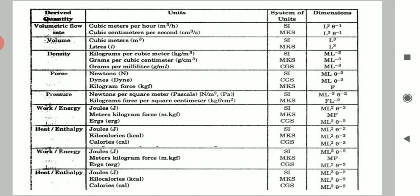The second derived quantity is volume. As discussed, volume is the multiplication of length, width, and height, so its unit will be meter cube. But for liquids or gas, volume is measured in terms of liters, so liter is also a unit of volume. The third is density — its unit is mass per volume, so kilogram per meter cube. The fourth is force, which is generally measured in Newton, with a smaller unit of dyne; another unit of force is kilogram-force.